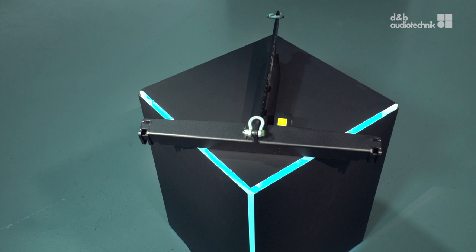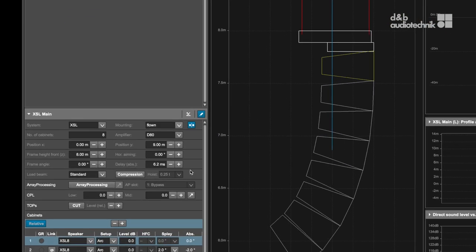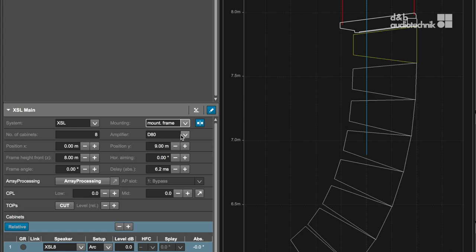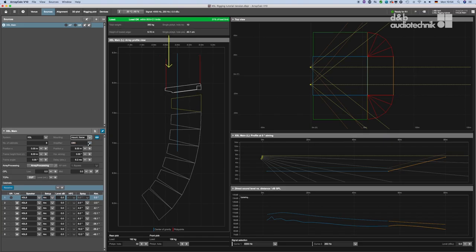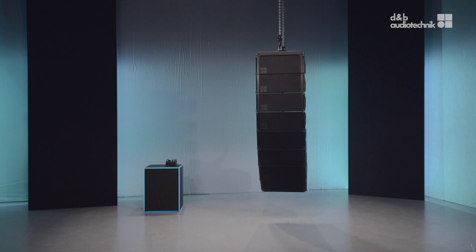For rigging the XSL in tension mode, it is also possible to use the mounting frame. The mounting frame has two recesses in the front and an array display link to connect to the first cabinet. The possible achievable vertical angles and limitations with the mounting frame can be simulated in ArrayCalc by choosing the respective option. How to rig the XSL in tension mode will be shown in detail in the following chapters.